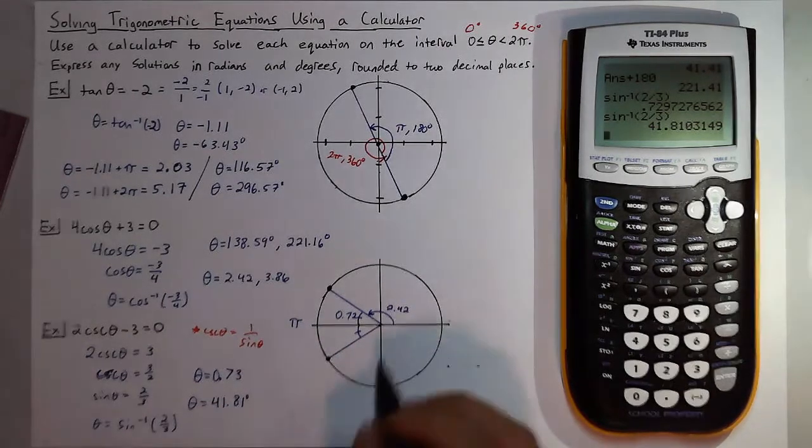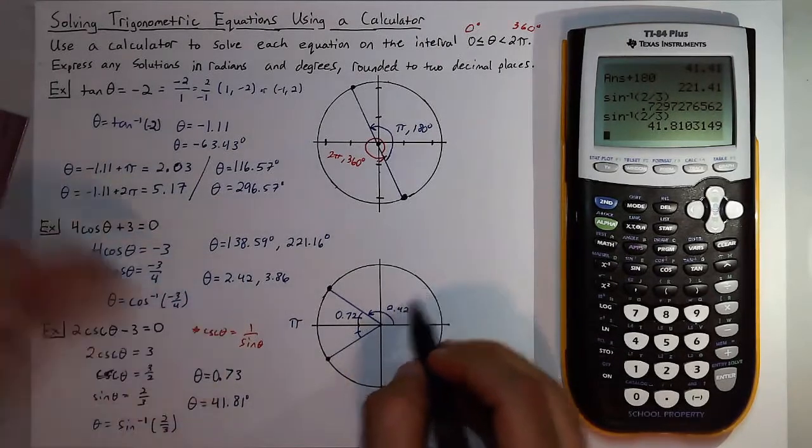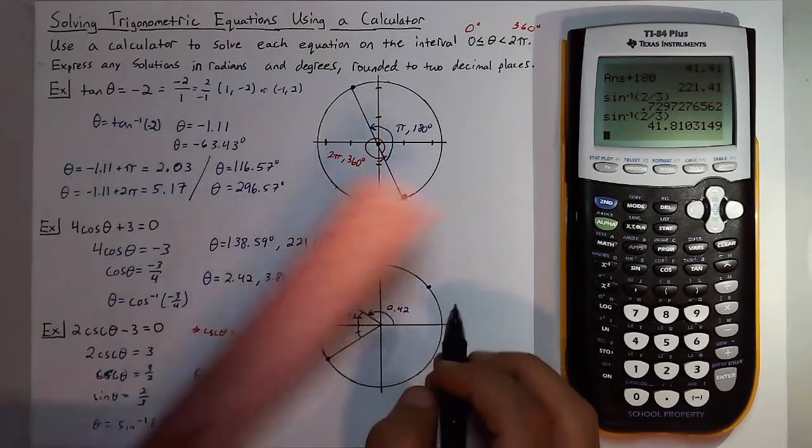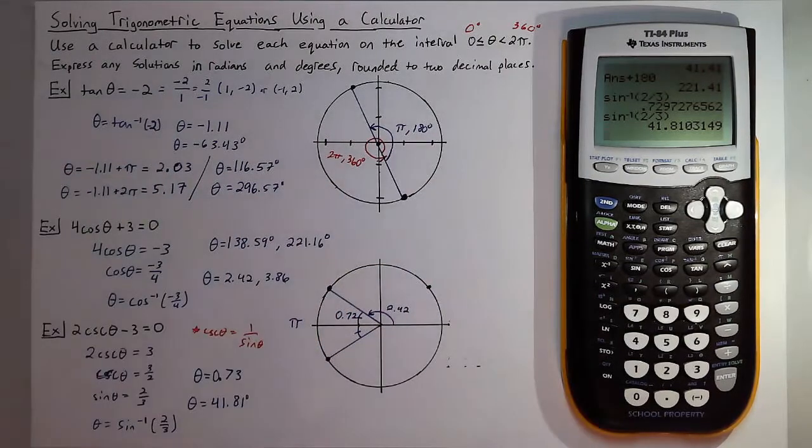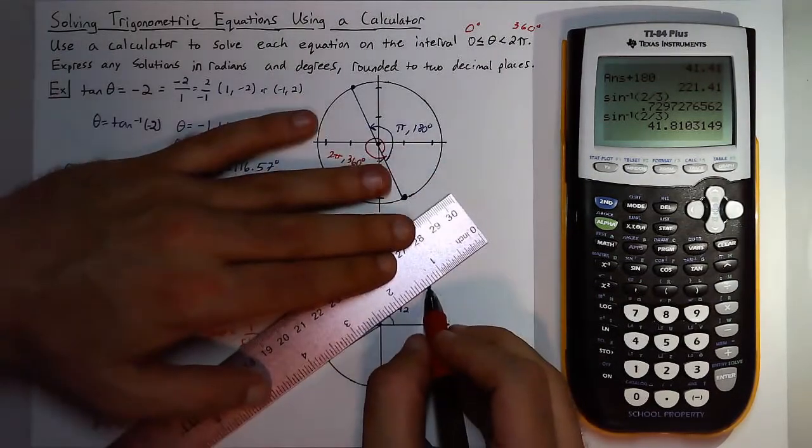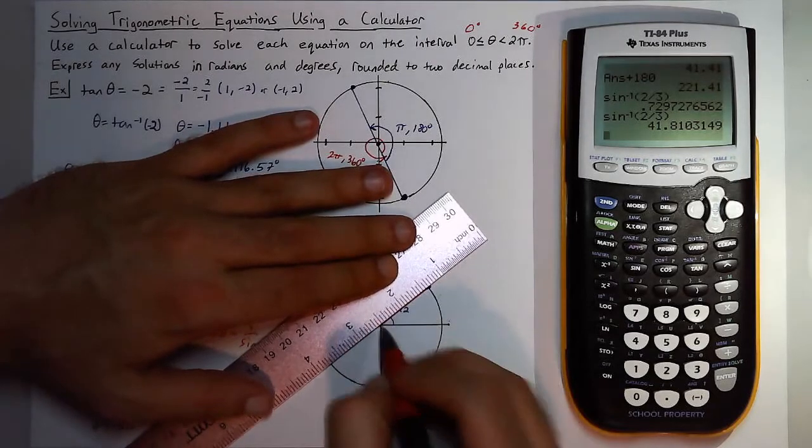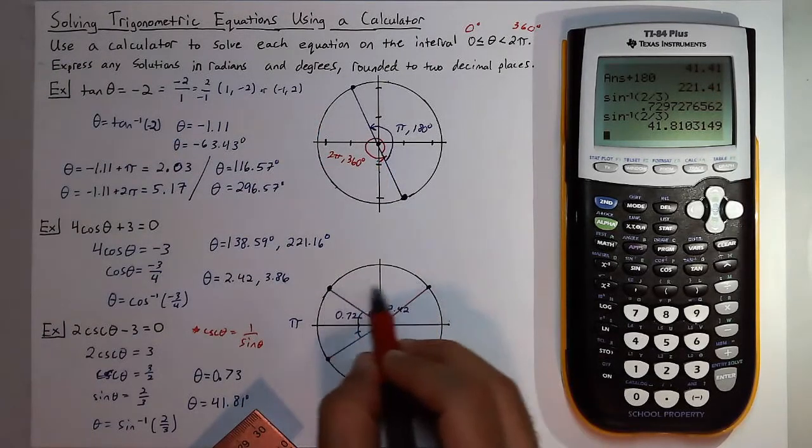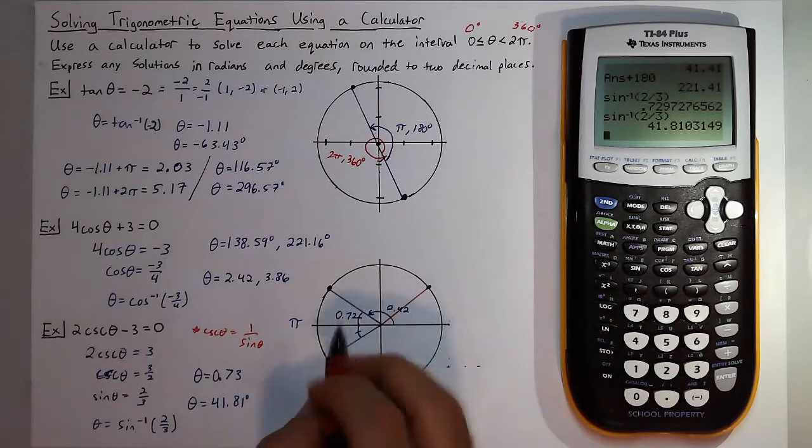So again imagine where it's at: it's in the first quadrant just below the 45 mark. I'll put this in red so it sticks out.